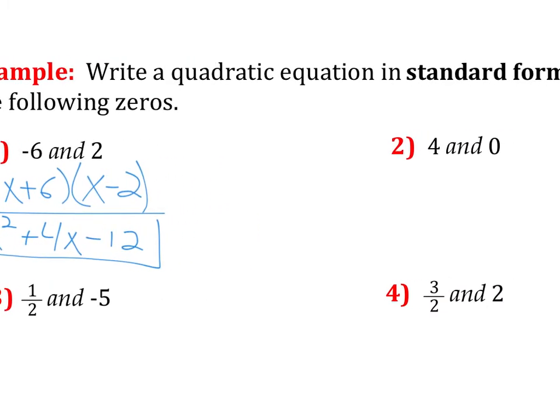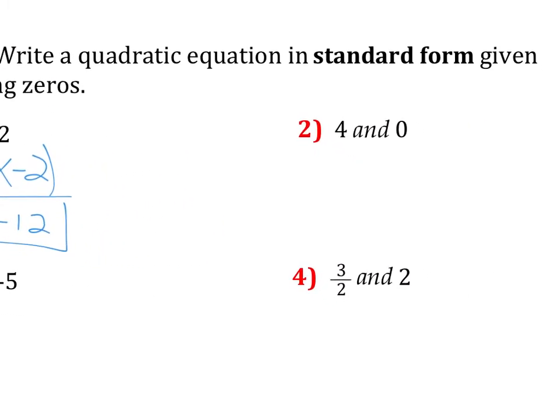Now from here, I just distribute that out. We would get x-squared plus 4x minus 12. Number two, 4 and 0. Well, I'd have to have an x minus 4. And then the second factor, you could do a plus or a minus 0. It doesn't really matter, right? Because it's 0. Zero doesn't have a sign. So right now, the way I have it written is still holding true to what we've been doing. I will give you the little heads up of anytime you have a plain old 0, that's just going to be a plain old x.